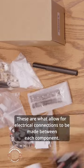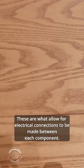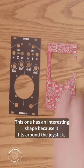First off is the printed circuit board. These are what allow for electrical connections to be made between each component. This one has an interesting shape because it fits around the joystick.